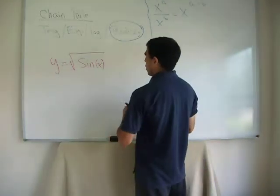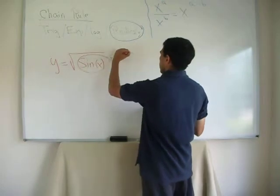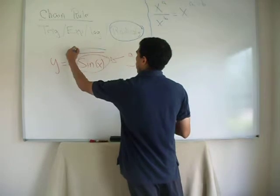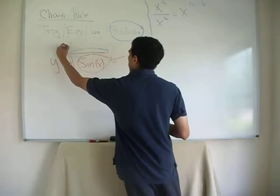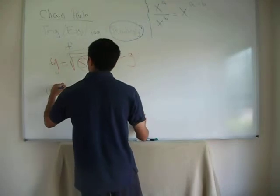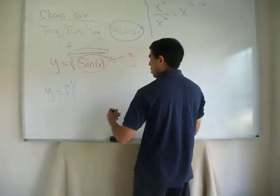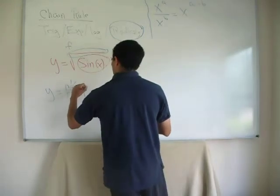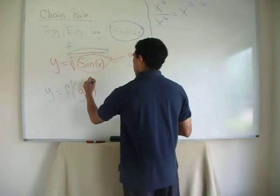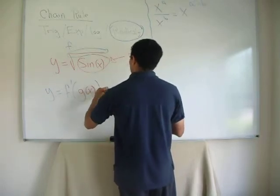So, which one is g? Well, the inner thing is g, and the square root is f. So, the derivative of this is going to be, again, f prime evaluated in g, times g prime. Chain rule.